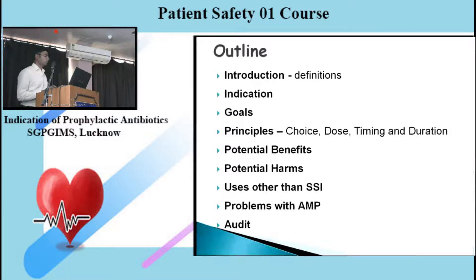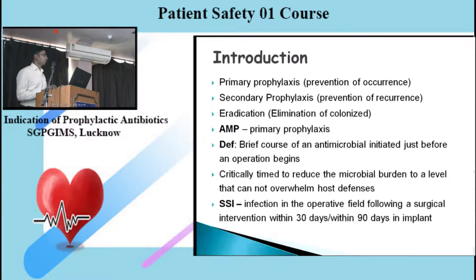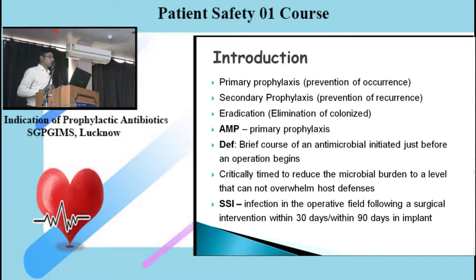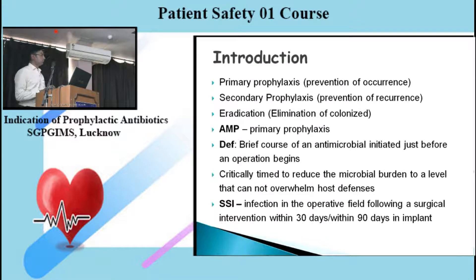The audit and conclusion. Coming to antimicrobial prophylaxis, there can be two or three types of prophylaxis. Primary prophylaxis prevents the occurrence of infection. Secondary prophylaxis prevents the recurrence of infection, and eradication is the elimination of colonized bacteria. Antimicrobial prophylaxis refers to primary prophylaxis — that is, prevention of the occurrence of infection.